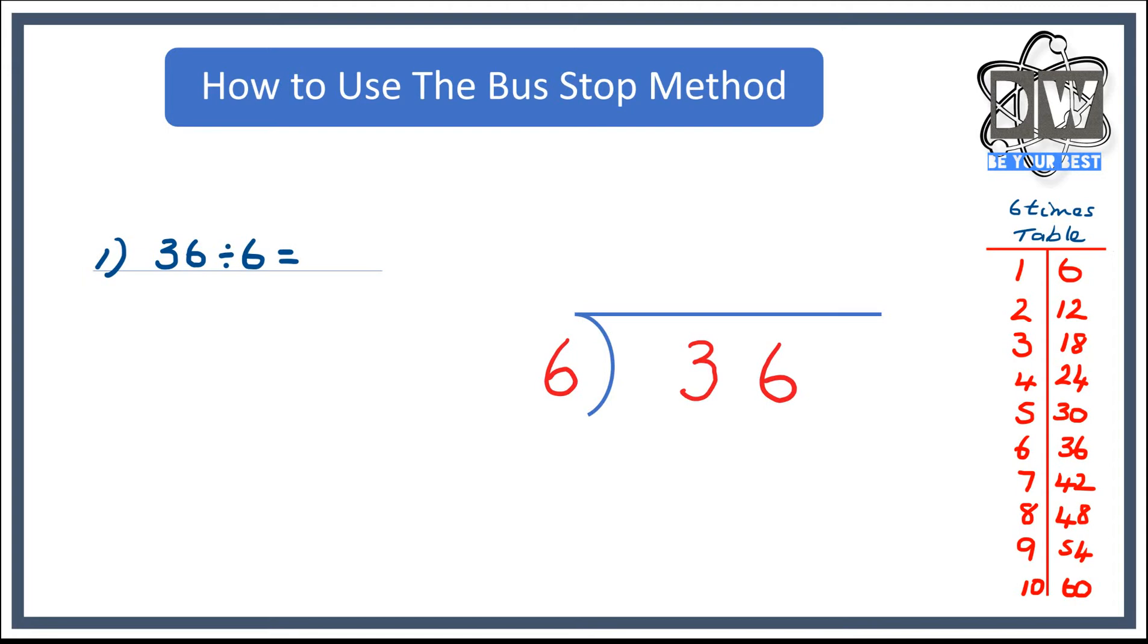So what we do is we say how many sixes go into three? Now three is smaller than six, so there are none. So we're looking at the times table and saying what is the most appropriate answer. If I said six times one, I have six. It's over three, and when we're dividing we can't do that. So I can say six times zero is zero, and how many remainders do we have? We have three because we're three off our answer.